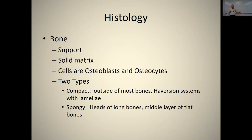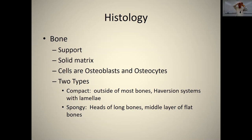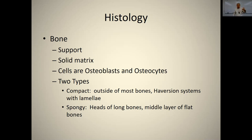Bone is mostly for support and allows muscles to move body parts. It has a solid matrix; immature cells are osteoblasts and mature cells are osteocytes, also sitting in lacunae. Compact bone, on the outside of most bones, has Haversian systems with lamellae, a central canal, and lacunae with osteocytes. Spongy bone is in the heads of long bones and the middle layer of flat skull bones, with trabeculae — cables of bone — and in long bones, the space contains red bone marrow, where blood cells are made.